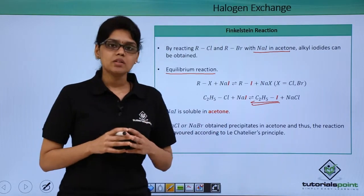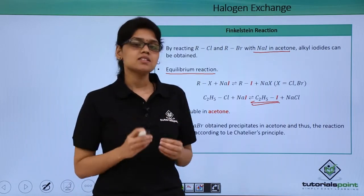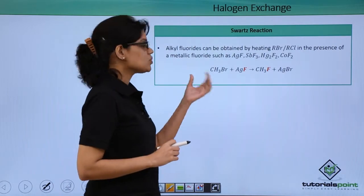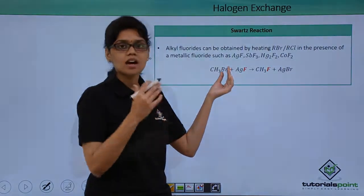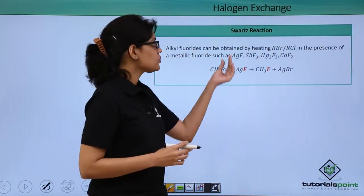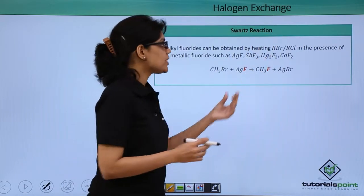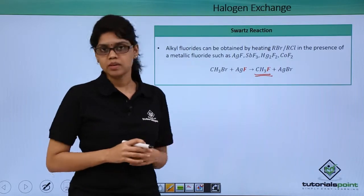There is one more named reaction which exploits halogen exchange to prepare alkyl fluorides. In this reaction, we react alkyl bromides or alkyl chlorides with fluorinating agents like AgF, SbF3, Hg2F2, and CoF2. The final product we get is an alkyl fluoride and the corresponding byproduct.